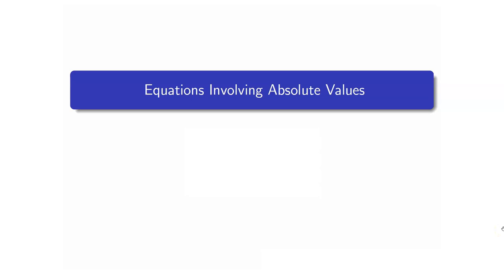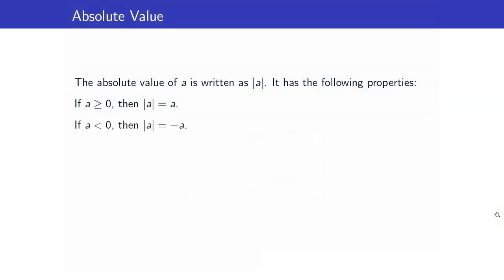In this lesson, I am going to talk about equations involving absolute values. Let us recall the definition of the absolute value of a number. The absolute value of a number A is written as |A|. It has the following properties: if A is positive or zero, then the absolute value of A is just itself. And if A is negative, then the absolute value of A is equal to negative A.